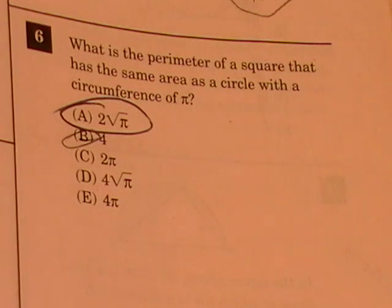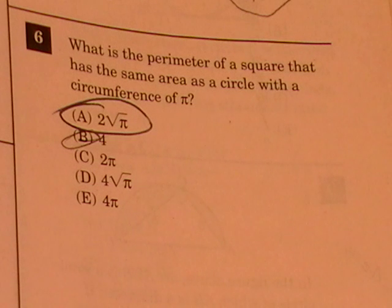This is another circles problem. What is the perimeter of a square that has the same area as a circle with a circumference of pi?